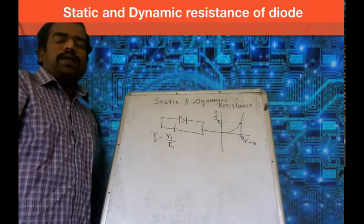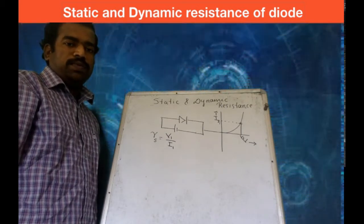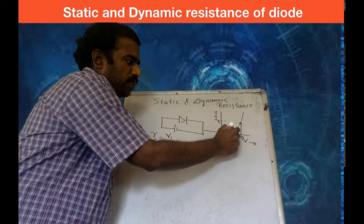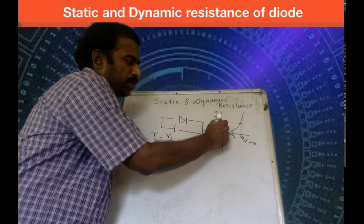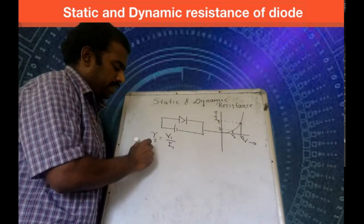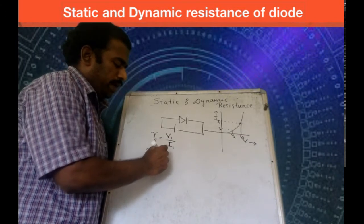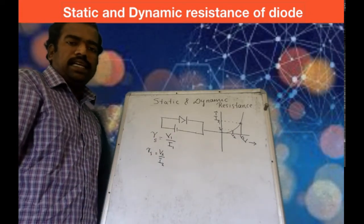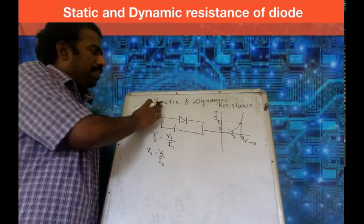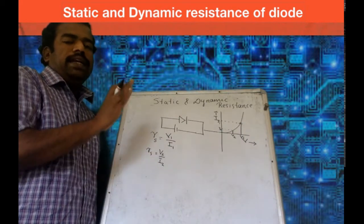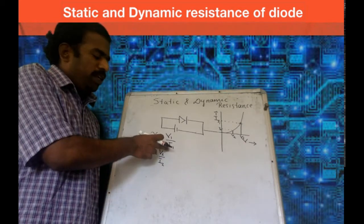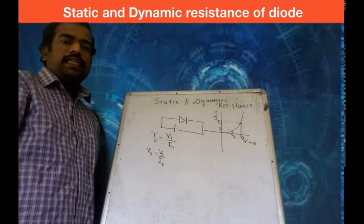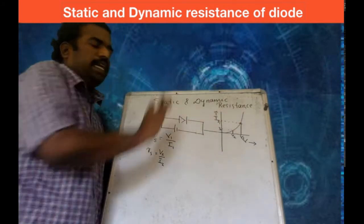In this way, you can calculate the static resistance of a diode. Static resistance can also be defined as the ratio of instantaneous voltage to instantaneous current. So if you are using a particular operating point, you take the voltage and current at that point.